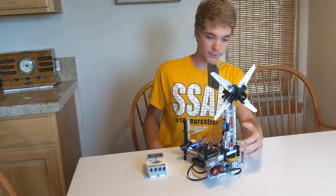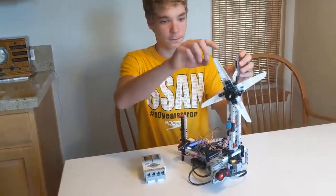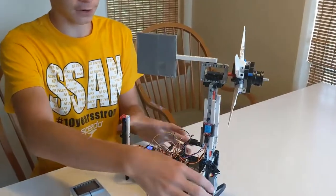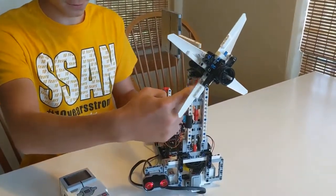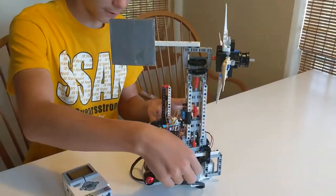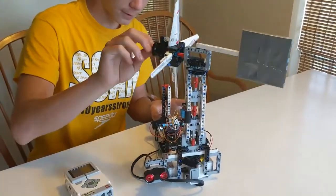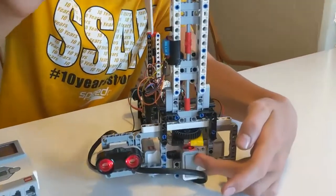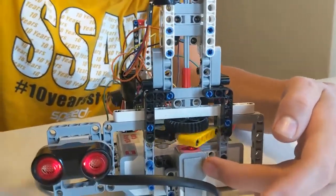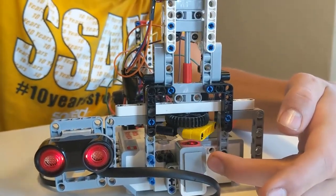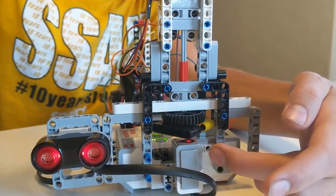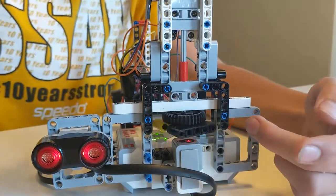The anemometer works by the wind spinning this windmill, which drives a drive shaft down to this square that is half yellow and half black. There's a color sensor underneath that measures how many times per second it switches from black to yellow to black again, which calculates the revolutions per minute and thus the wind speed.